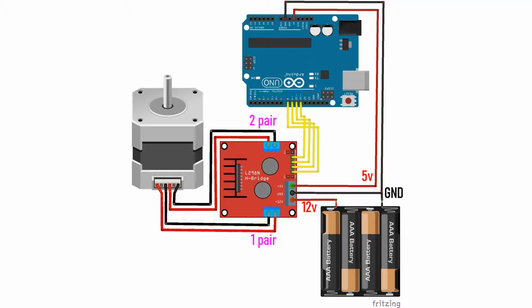In summary, connect the first pair in OUT1 and OUT2, and the second pair in OUT3 and OUT4. Connections IN1, IN2, IN3, and IN4 on the board to the pins 8, 9, 10, and 11 on the Arduino. The 5 volts connection on the board to the 5 volts pin on the Arduino.